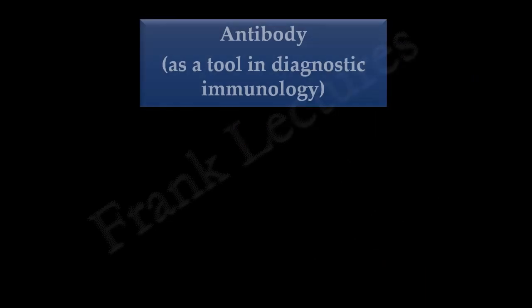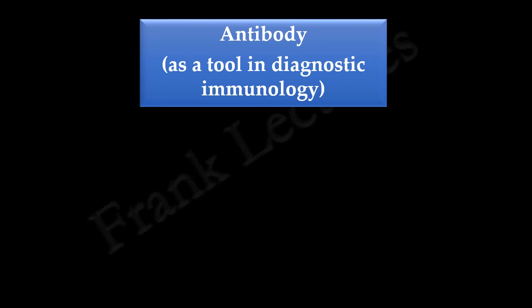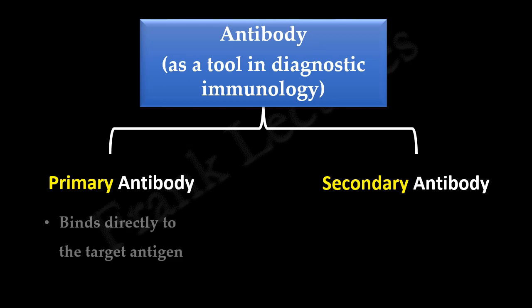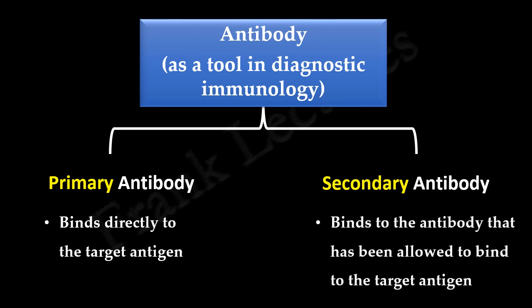We understand that antibodies are a great tool in diagnostic immunology. The antibodies used for the detection, sorting, and quantitation of antigens and proteins of interest are of two main types: primary antibody and secondary antibody. This classification is based on whether the antibody directly binds to the antigen of interest, or it targets another antibody bound to the target antigen. In this video lecture, we will understand in detail what is the primary and secondary antibody and their importance.